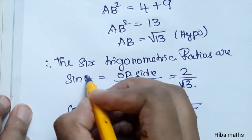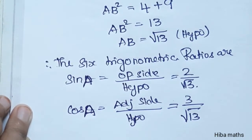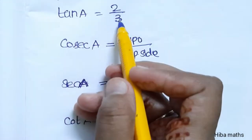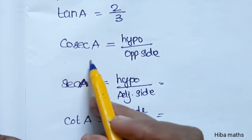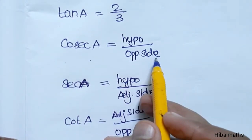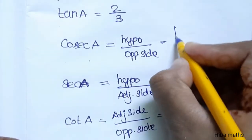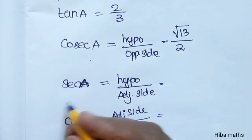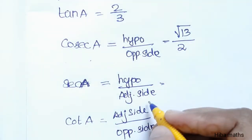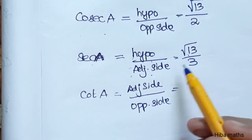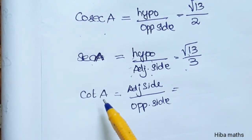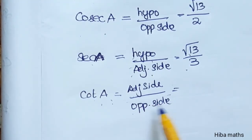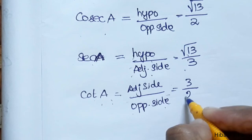Tan A is equal to 2 by 3, as given. Cosec A is equal to hypotenuse by opposite side — hypotenuse is root 13, opposite is 2. Sec A is equal to hypotenuse by adjacent side — hypotenuse is root 13, adjacent is 3. Cot A is equal to adjacent side by opposite side — adjacent is 3, opposite is 2.